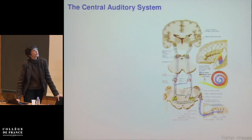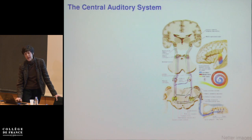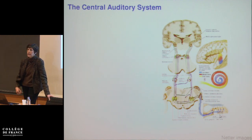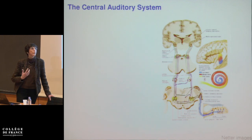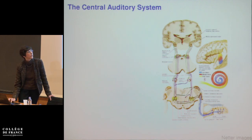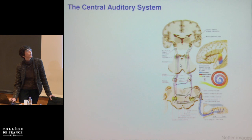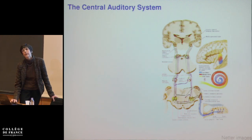This is the Netter diagram of the ascending auditory pathway. You can see a zoomed-in picture of the organ of Corti and the cochlea of the inner ear, where hair cells perform sensory transduction of sound vibrations into neural signals transmitted up the auditory nerve into the brainstem cochlear nuclei, superior olivary nuclei, then up through the lateral lemniscus into the inferior colliculus, then to the auditory thalamus, and onto the cortex.